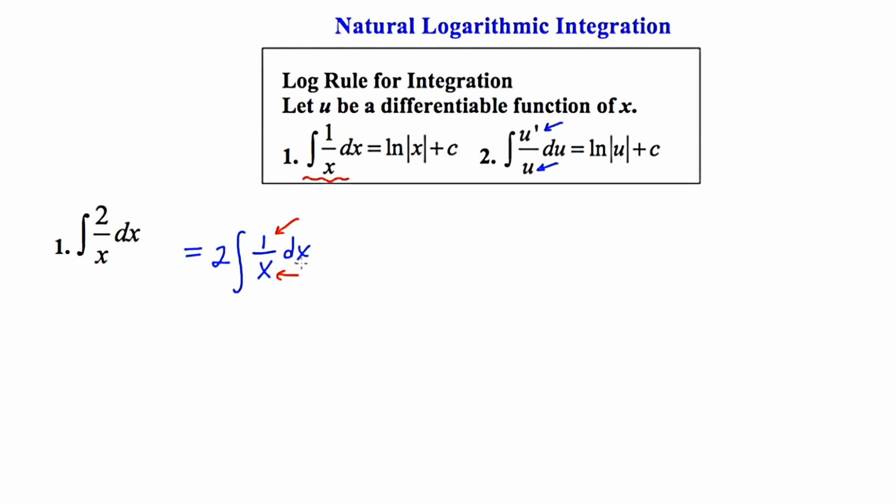And if we take the antiderivative, we're going to get the 2 that's out in front. We're going to get the natural log of our denominator, which in this case is x. And then we're going to put on our arbitrary constant plus c. So this is our first example of natural logarithmic integration.